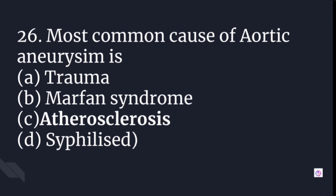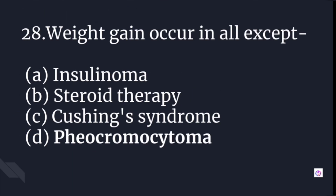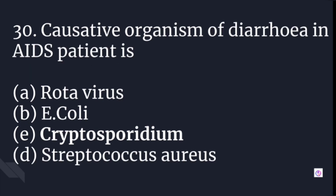The most common cause of aortic aneurysm is atherosclerosis. In AIDS patients, pneumonia occurs due to Pneumocystis carinii. Weight gain occurs in all except pheochromocytoma. Break bone fever is also called dengue fever. The causative organism of diarrhea in AIDS patients is Cryptosporidium.